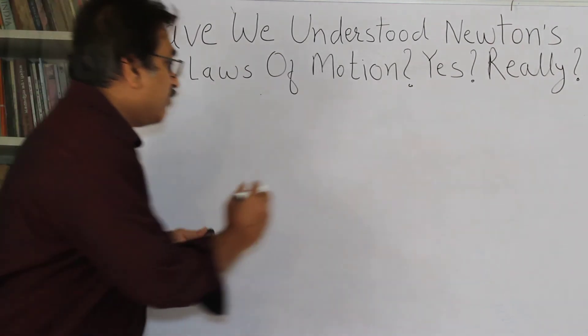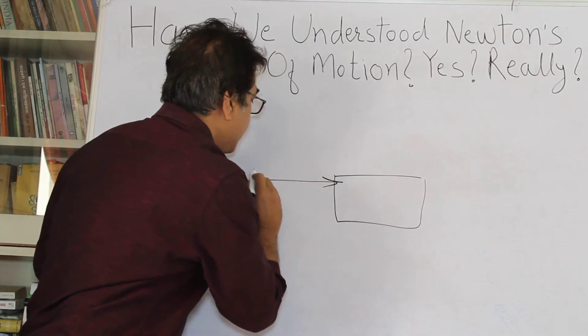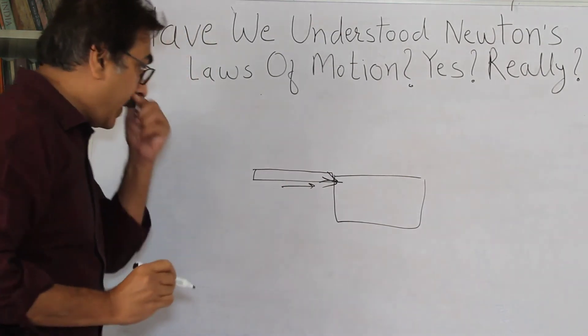Right? So, the free body would be like, this is the object. This is the pen. Right? So, I would say this is the pen and acting on it, this is the force acting on it. Okay?